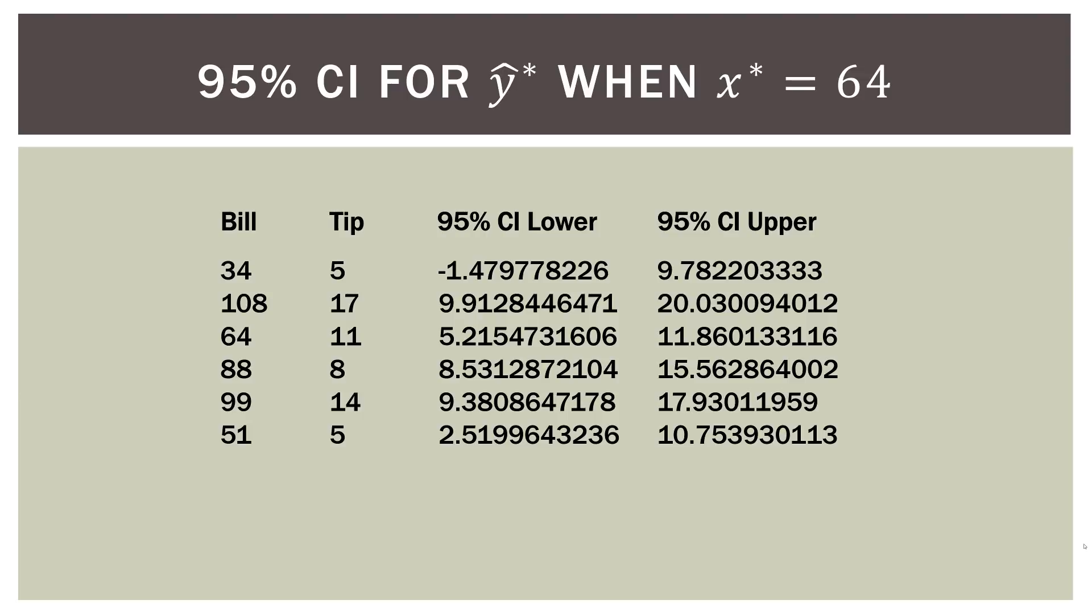And voila, here is the computer output we had before. I took off the black box. Here is our interval we calculated by hand. So if you look at $64, we have 5.2154 in the computer output. We have 5.215473, same thing, in our by hand calculation. Then we have 11.860133116 for the upper in the computer output. And then we have 11.860113 in the by hand calculation here at the bottom.